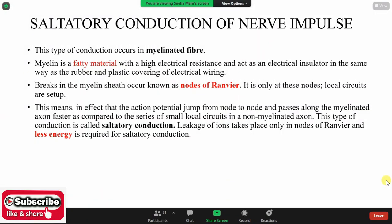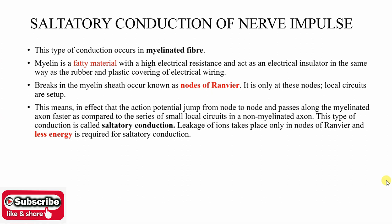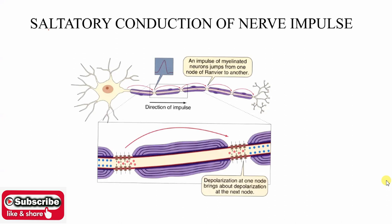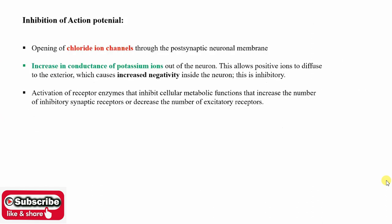Hello everyone, welcome to class. Today we start our lesson. Last class we completed saltatory conduction. We saw how myelinated neuronal cells process saltatory conduction and how the action potential is generated — how electrical impulses are generated along the axonal cell. Now we will understand how the inhibition of this action potential occurs.